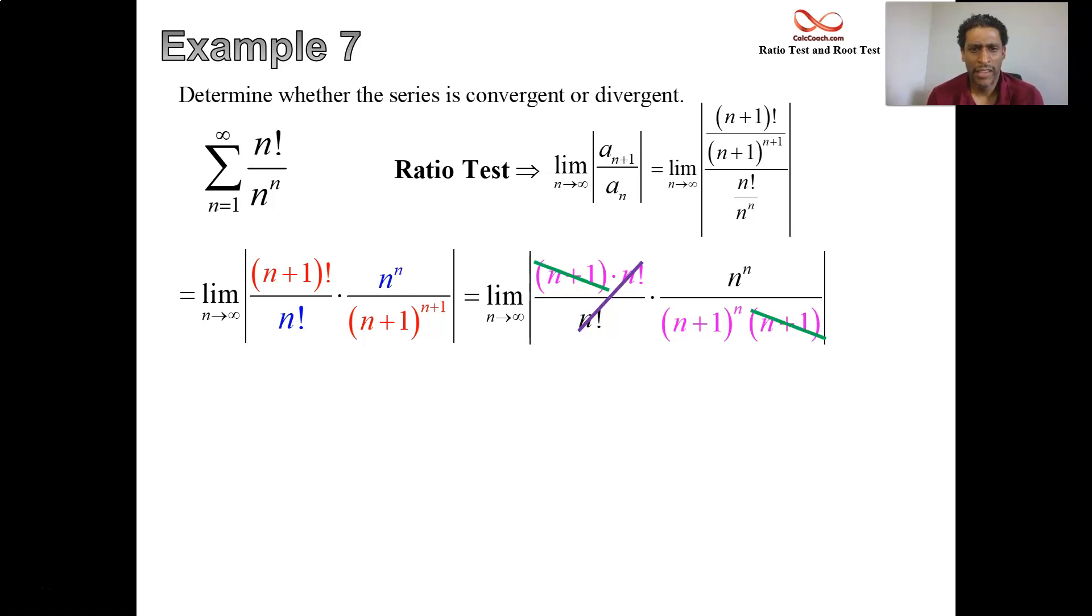And what are we left with? We're left with n to the n on top of n plus 1 to the n, the quantity to the n. And we can write that as the entire fraction raised to the nth power. And where do we go from here? The inside is going to 1. The exponent is going to infinity. It's an indeterminate form 1 to the infinity power.